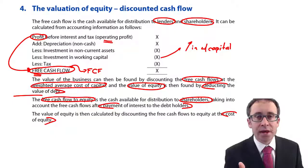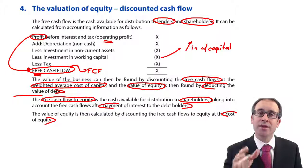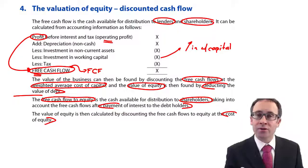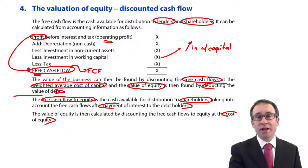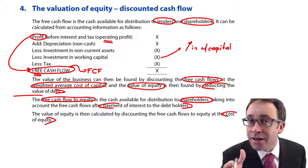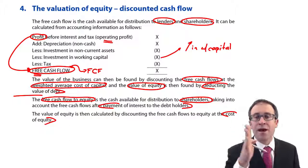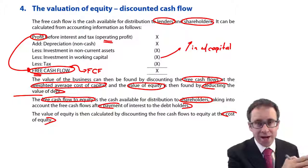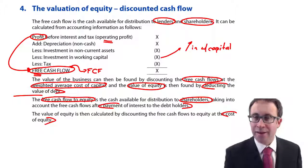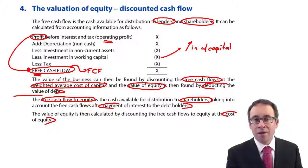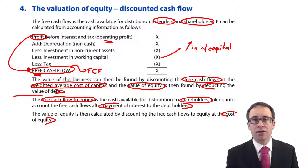Free cash flow to equity, however, is the cash flow attributable only to equity shareholders. We calculate it by working out free cash flow and then deducting the interest paid to debt holders. That free cash flow to equity is then used to value equity by discounting at the cost of equity. Both methods should technically give you the same answer. In the next video we'll go through and put some numbers to the theory.